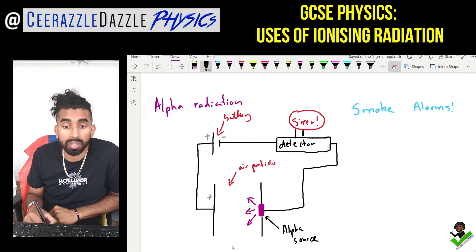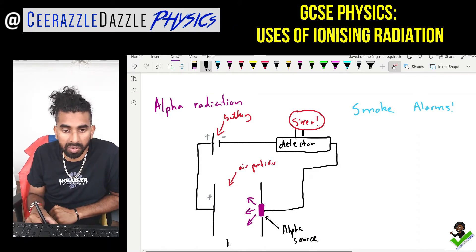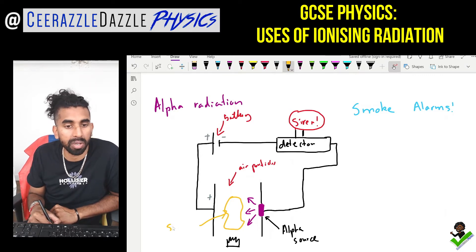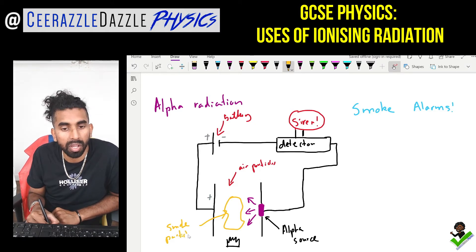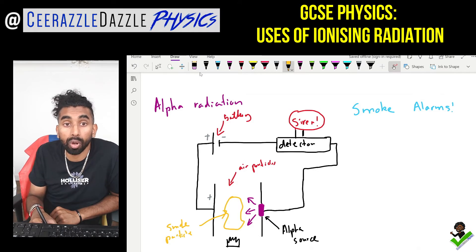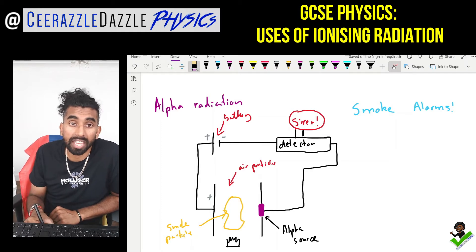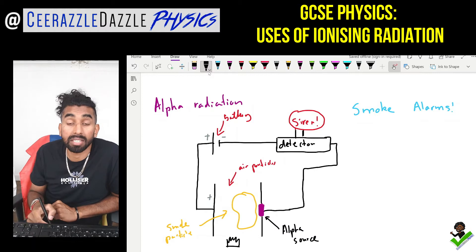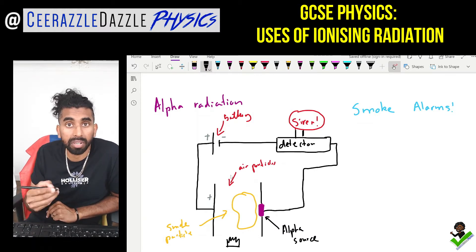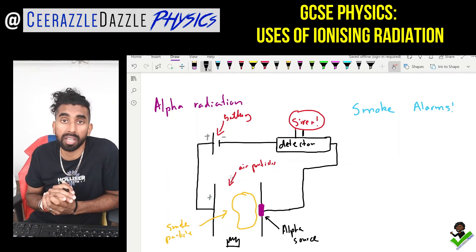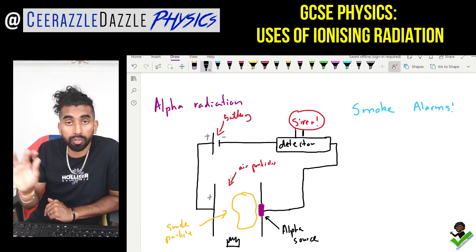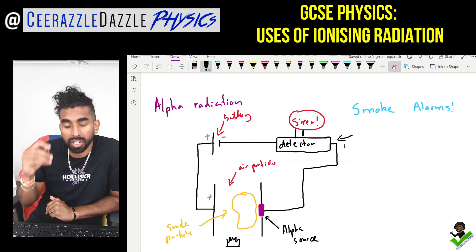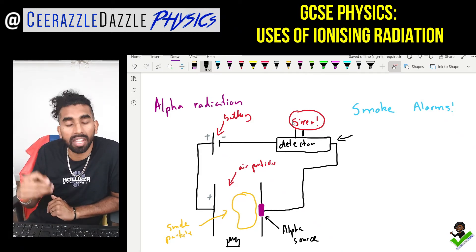What happens when smoke enters the chamber? Let's say a fire starts and a smoke particle enters. As it enters, it blocks the alpha radiation — the alpha radiation can no longer pass through. With no alpha radiation crossing the gap, no ionization takes place, and therefore there is no flow of charge around the circuit. The detector senses that drop in charge and triggers the siren, setting the alarm off.